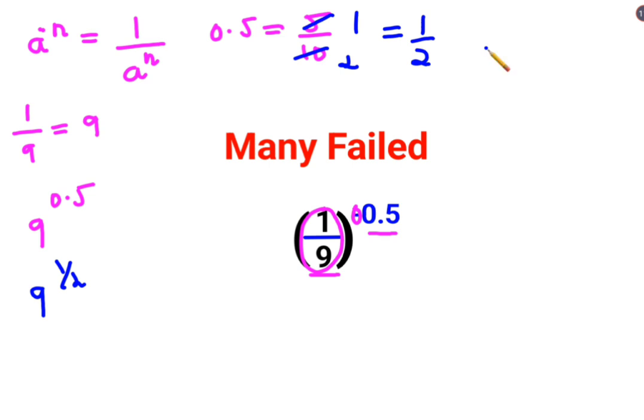Now remember that a raised to 1 upon n can be written as nothing but the nth root of a. So similarly, if you have a raised to half, half is basically nothing but the root of a. So here basically you will find root of 9, which is just 3.